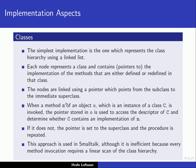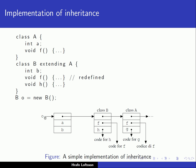When a method M of an object O, which is an instance of class C, is invoked, the pointer stored in O is used to access the descriptor of C and determine whether C contains an implementation of method M. When we send a message to object O, the pointer in the object itself to its class descriptor is used to find out whether the method exists in the class. If the method exists, we have a pointer to the code for it. If it doesn't, we use the link from the subclass to the superclass and search in the superclass instead.